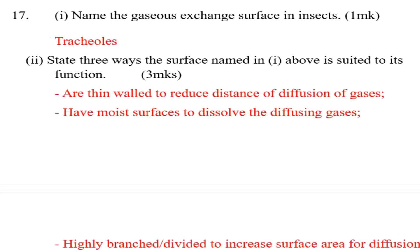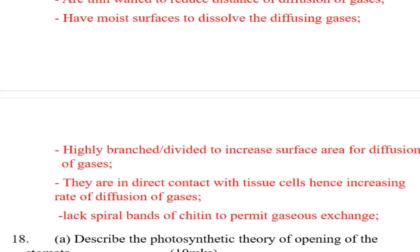Number one: they have thin walls to reduce the distance of diffusion of gases. Number two: they have moist surfaces to dissolve the diffusing gases. Number three: they are highly branched or divided to increase surface area for diffusion of gases. Number four: they are in direct contact with the tissue cells, hence increasing the rate of diffusion of gases.